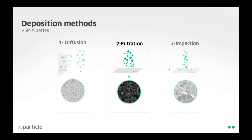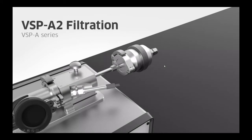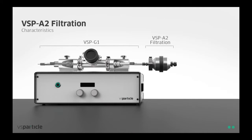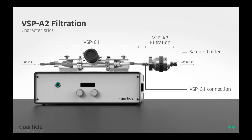I will now introduce the second deposition mechanism, which is filtration. Here you can see the VSP A2 filtration unit, also attached to the VSP G1. On the right-hand side you can see a schematic where we use a porous medium — like a filter — which is perpendicular to the gas stream. The particles then deposit on the fibers of the filter or other porous media. Similar to the previous accessory it is attached on the right-hand side of the G1, with a gas inlet on the left. The sample holder is inside the chamber and can be unscrewed by the ring, and there is a gas outlet to dispose any remaining aerosol.